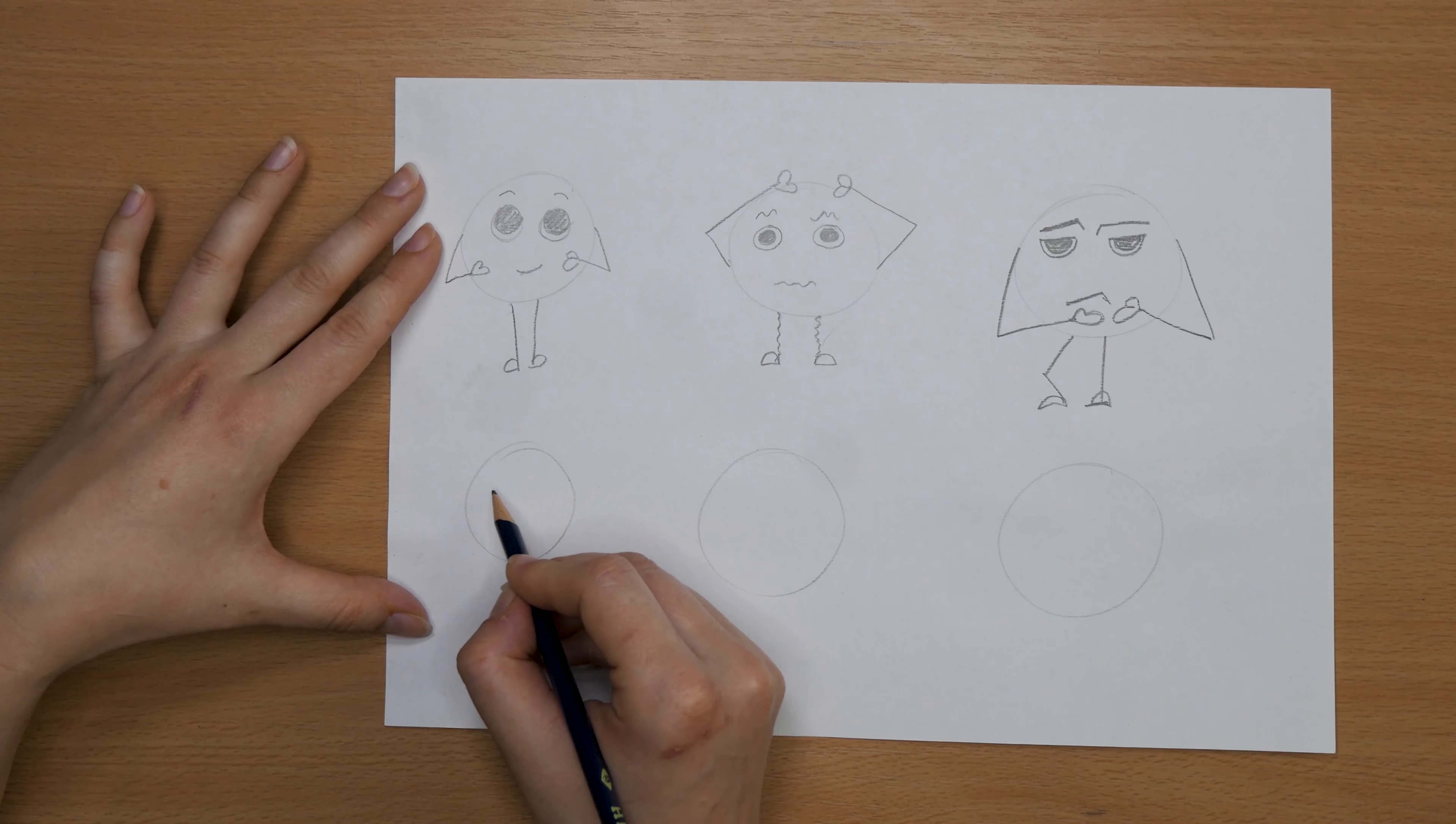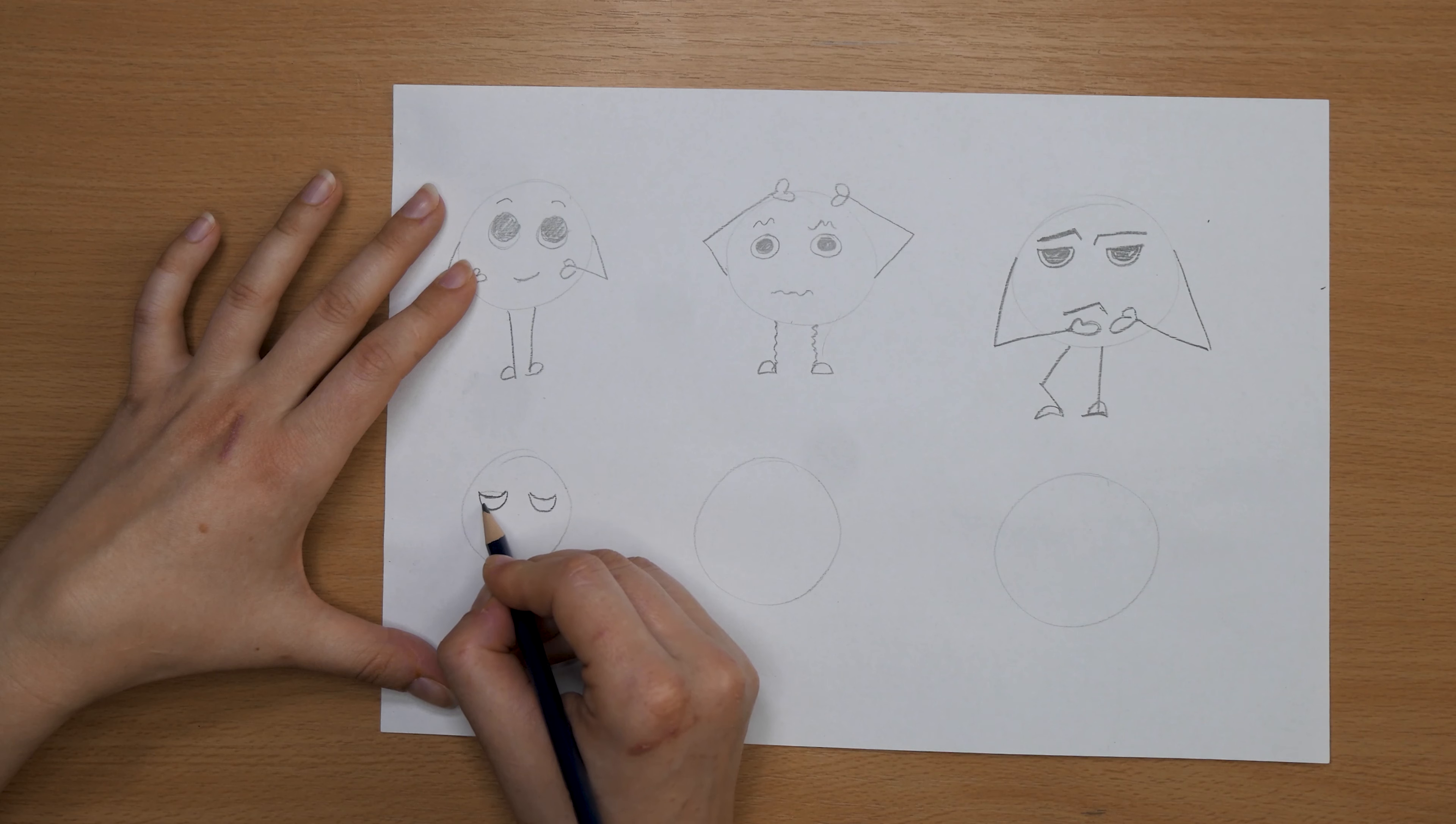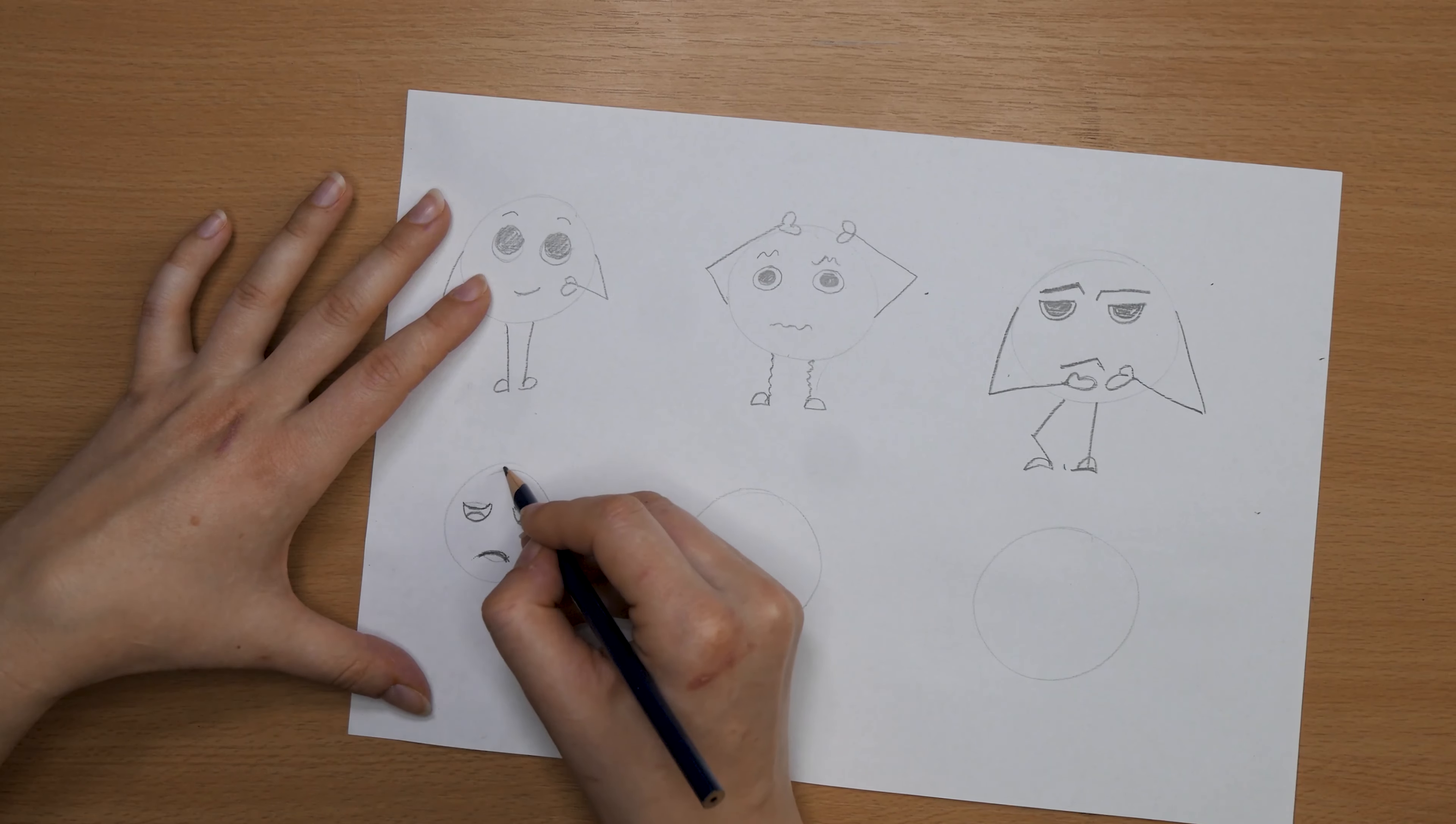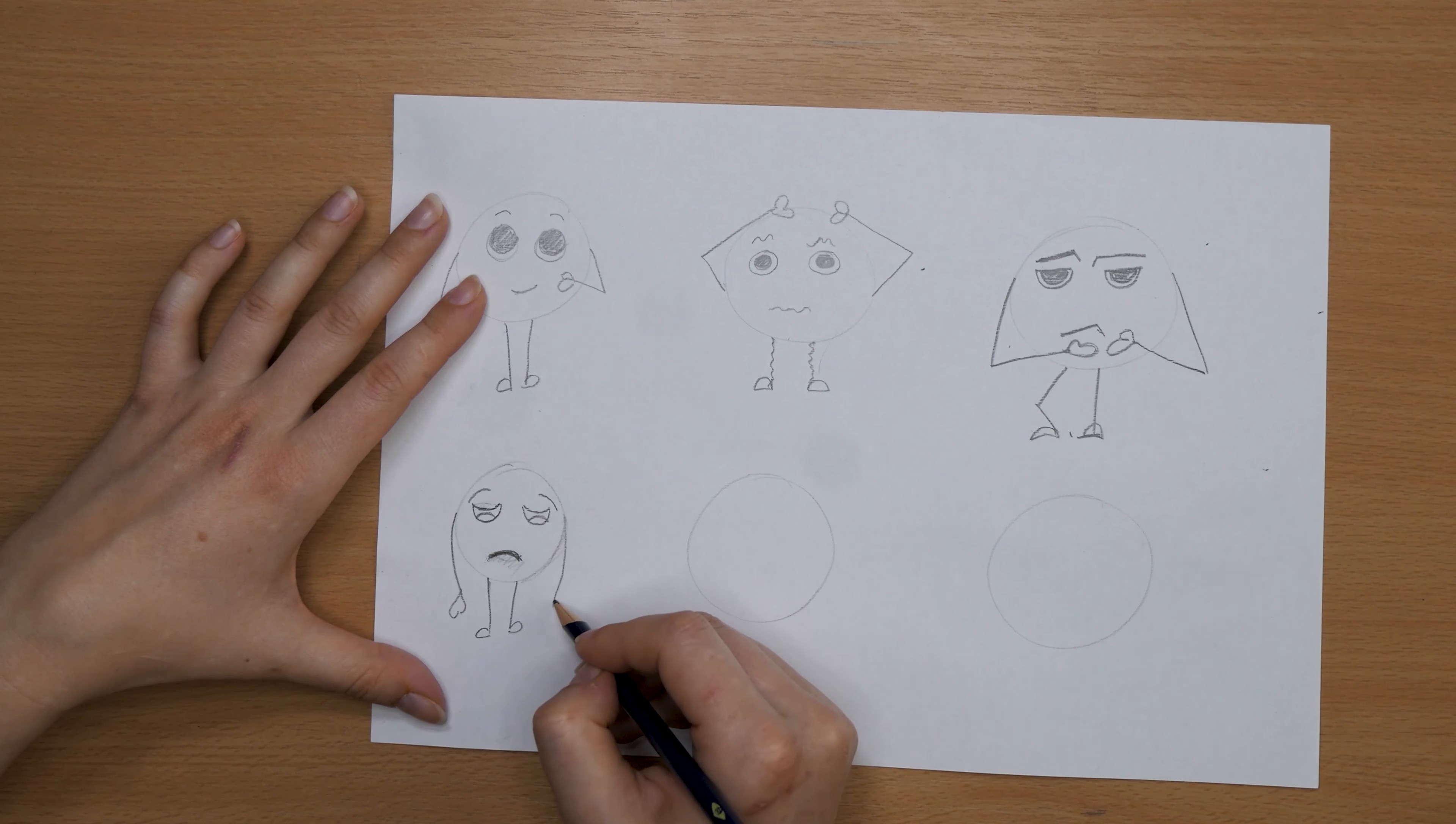Let's try another one, a bit more sad this time. So to make the sad one, I start from the more worried or angry one and just go down with all the lines like this, and the middle of the eye is looking down sad. And the eyebrows are falling, sort of. And now the legs and arms just next to the body. Very sad.